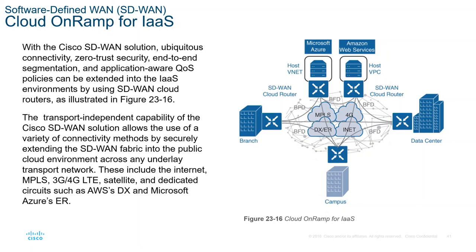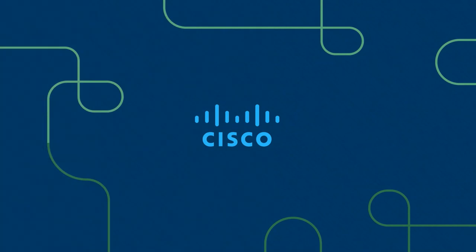Cisco SD-WAN connects almost everything intelligently and securely. You can even use AWS Direct Connect and Microsoft Azure ExpressRoute, with compatibility available across different platforms. That ends the video discussion. Thank you for listening and watching — have a great day, see you on the next video.